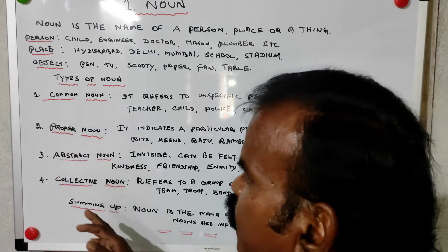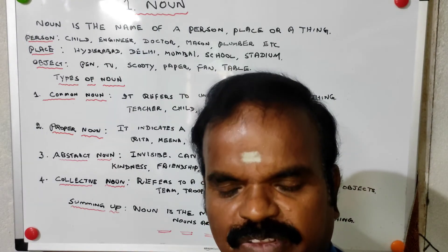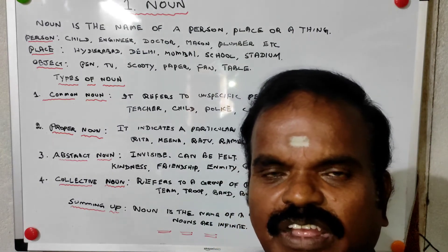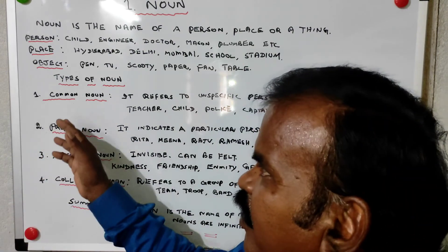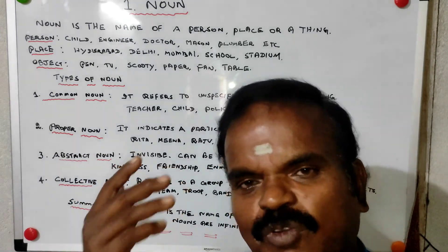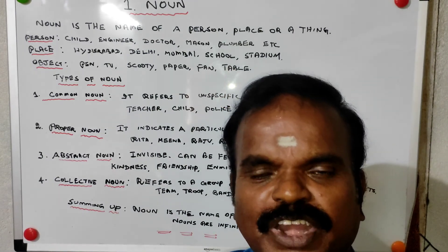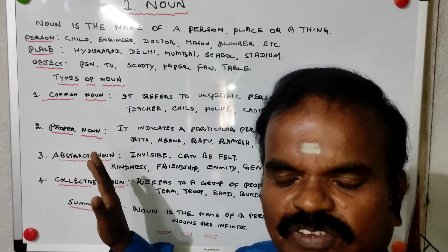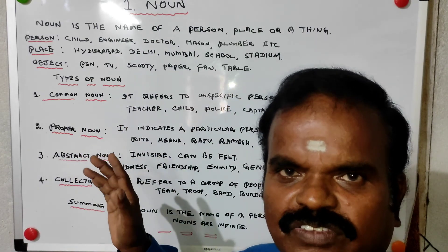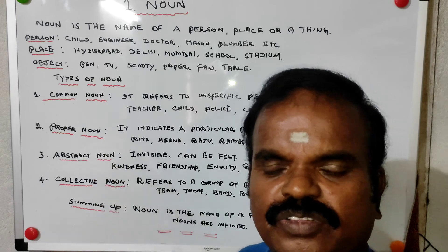Summing up: noun is the name of a person, place, or an object. Nouns are endless, and in every sentence nouns will be there. The types of nouns are common noun, proper noun, abstract noun, and collective noun. Nouns can be classified further. So that's all about nouns today — thank you very much.